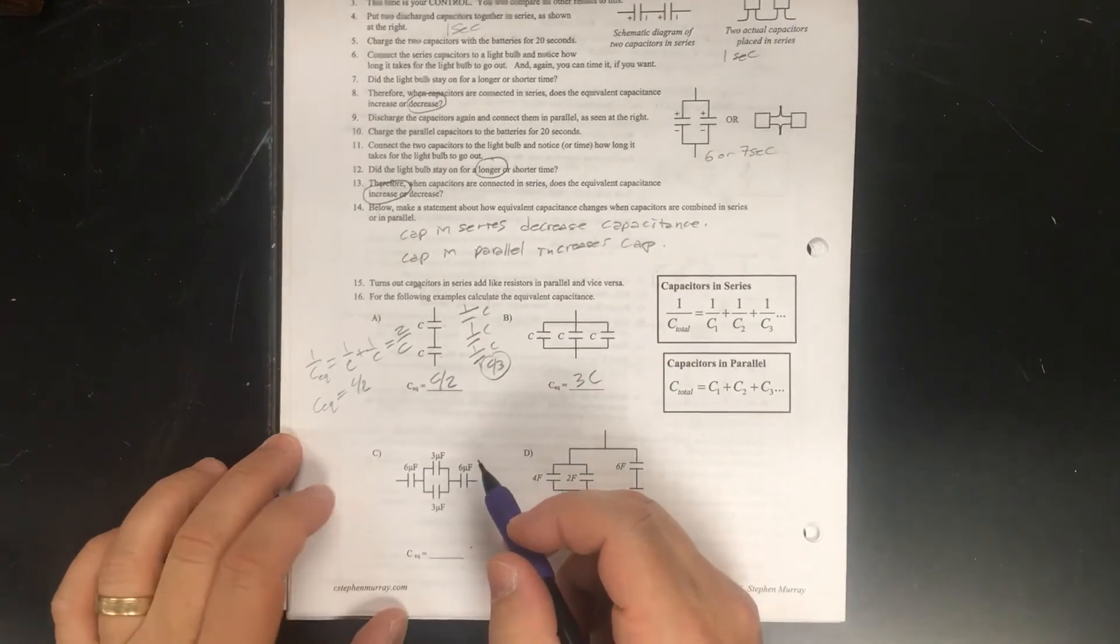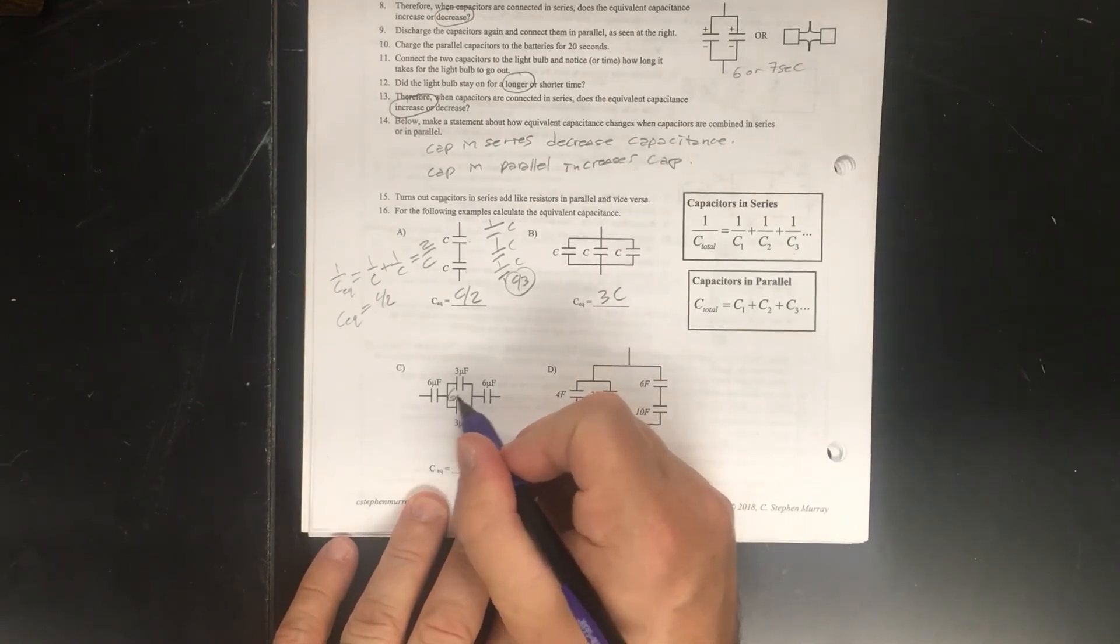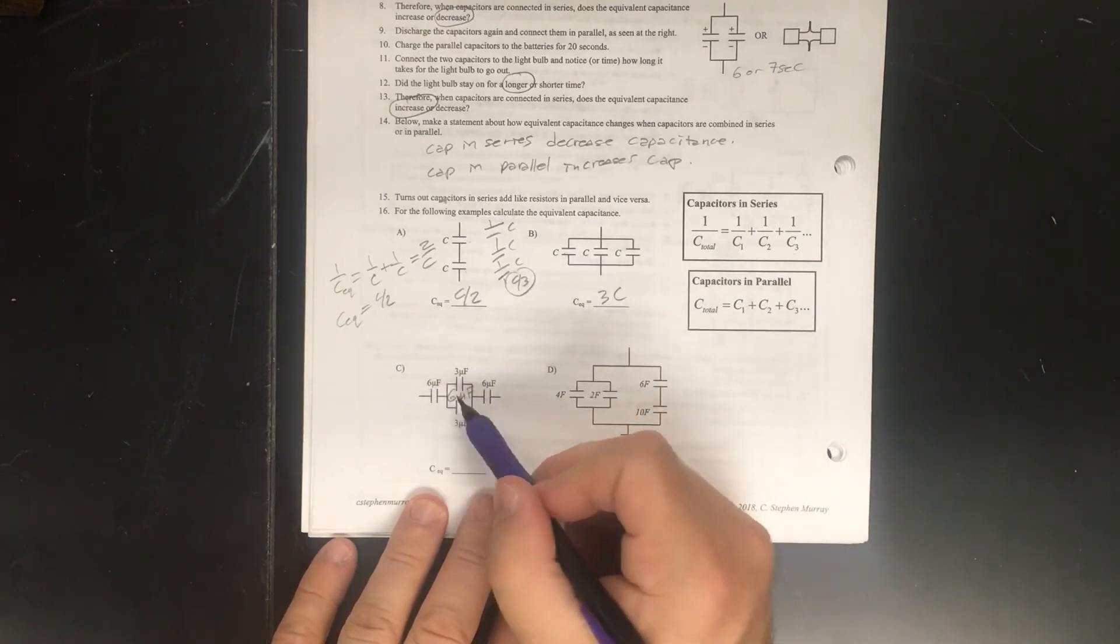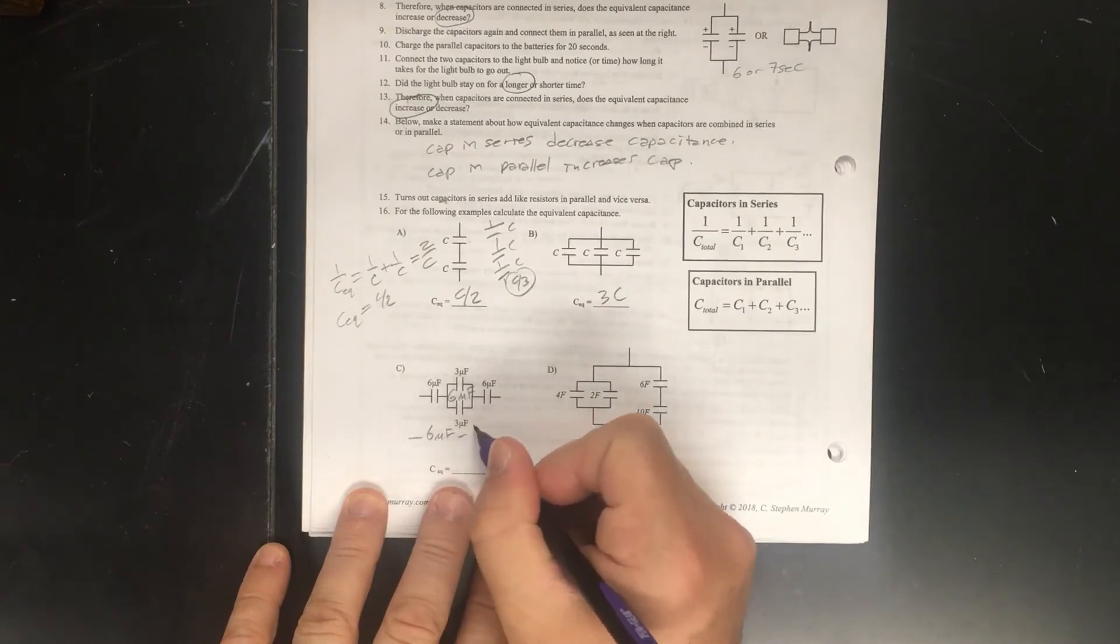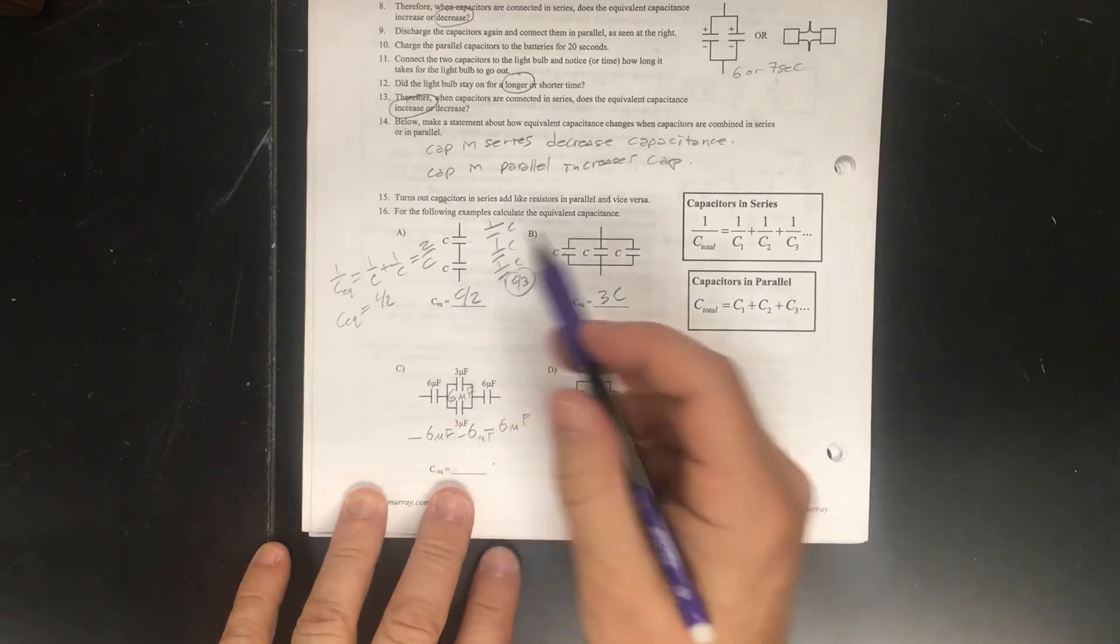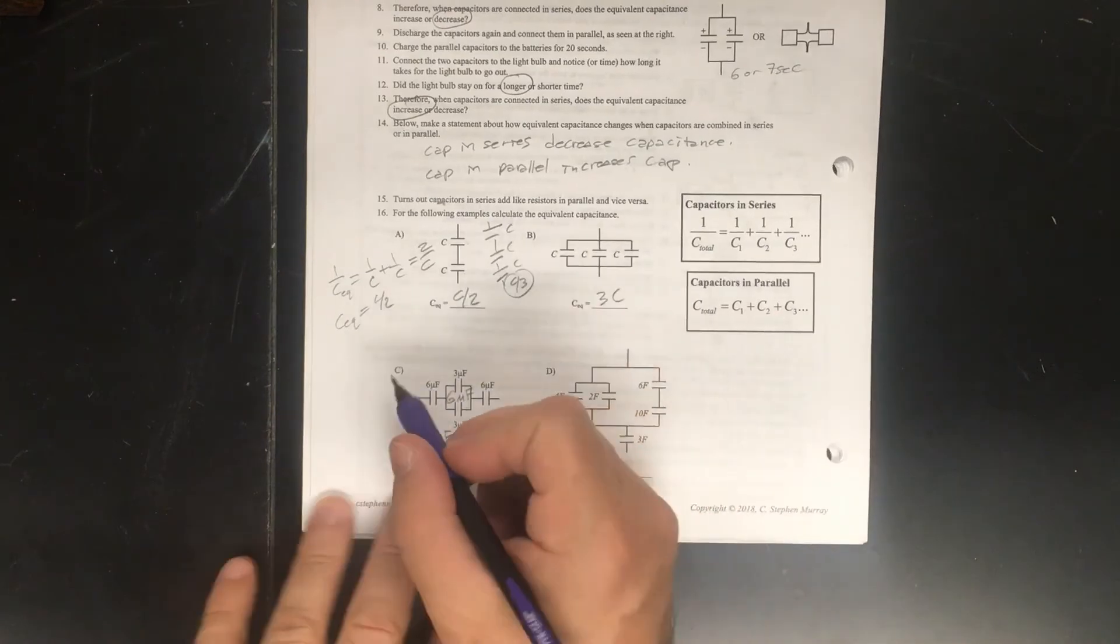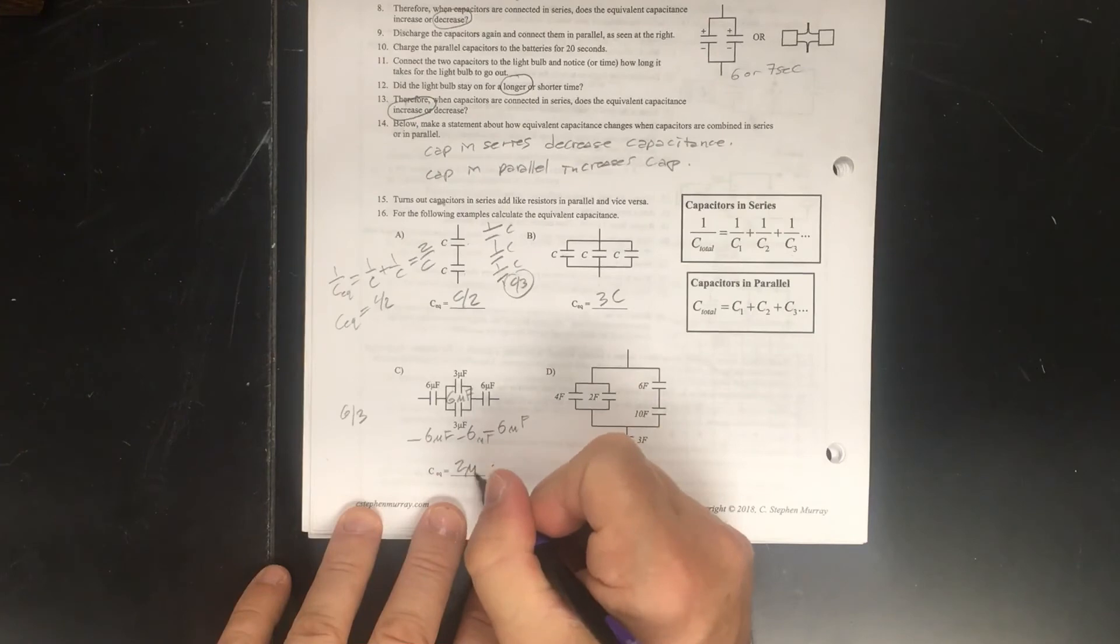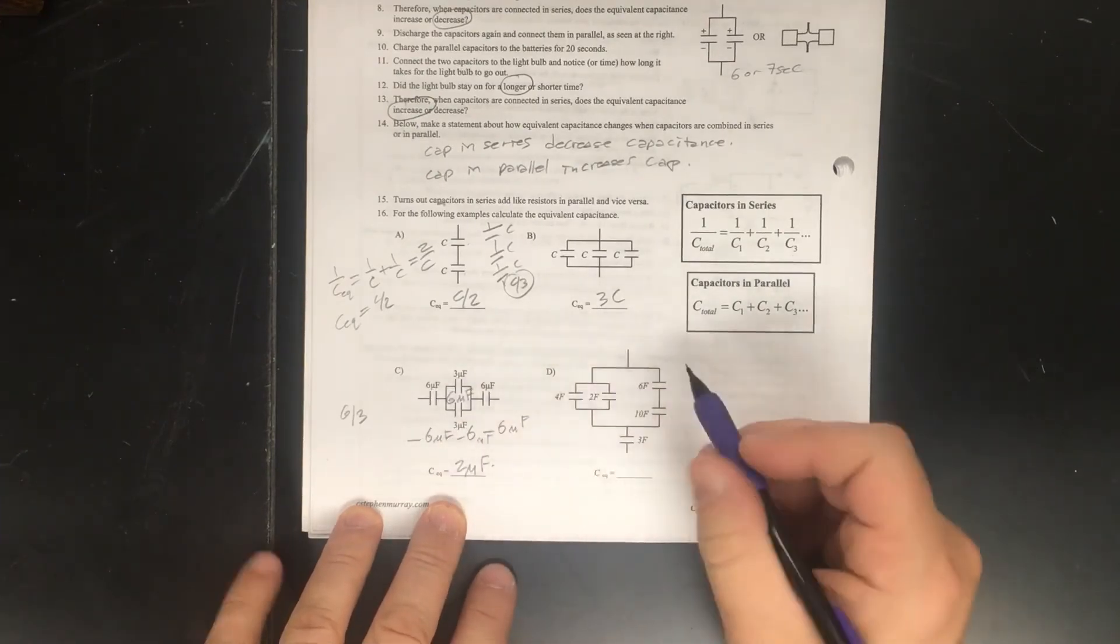Down here we're going to have to redraw a little bit. Okay. These two are in parallel, so this is going to be 6 microfarads, micro being times 10 to the minus 6. And now we have 3. We can redraw this to see this now. Just a 6 microfarad, a 6, and a 6 microfarad here. And just as we did here, this is going to be 1 over 6 plus 1 over 6 plus 1 over 6. So that's going to be 6 divided by 3, which is going to be 2 microfarads, because each one of these here gets one-third of the voltage.